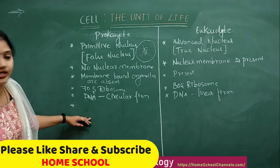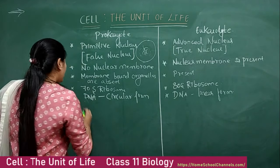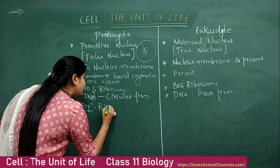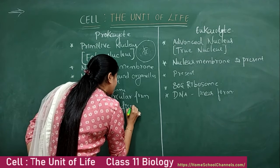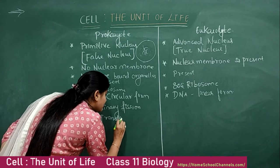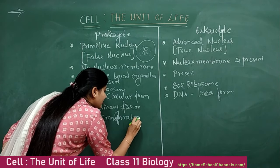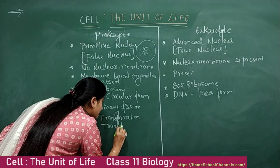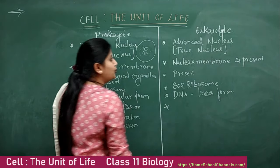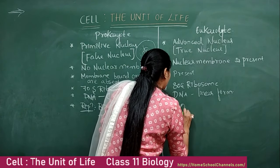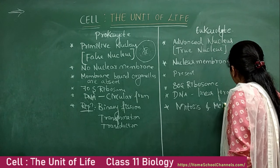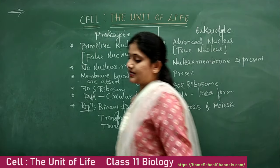Moving on to reproduction: in prokaryotes, reproduction is mainly by binary fission, transformation, and transduction. In eukaryotes, reproduction is mainly by mitosis and meiosis.